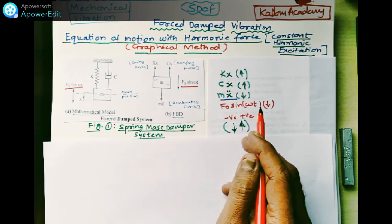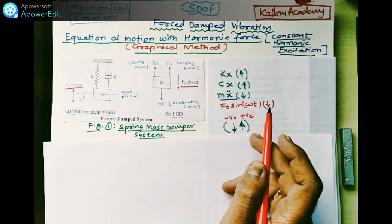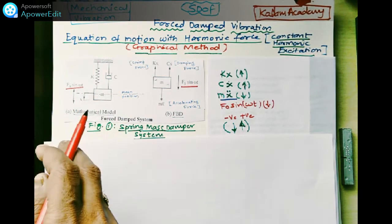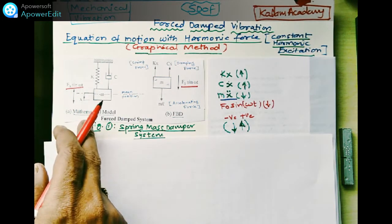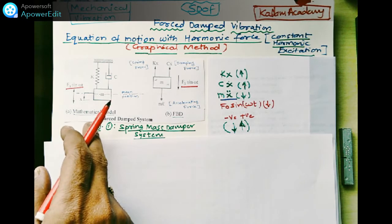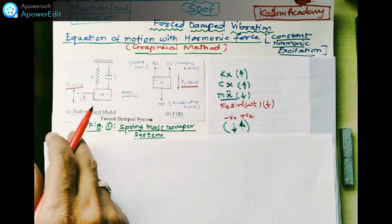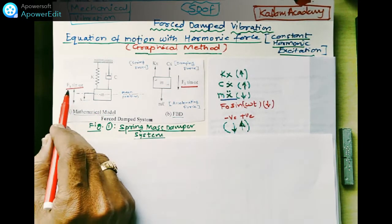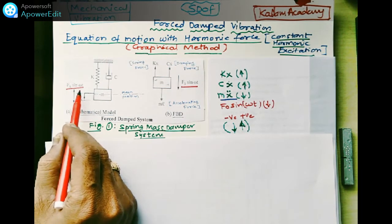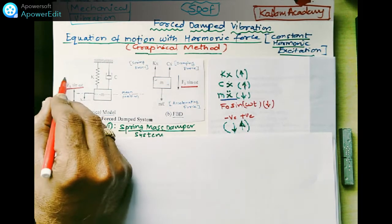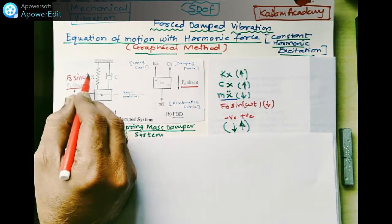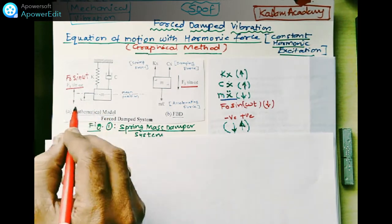In this single degree of freedom force damped vibration, we have to consider this vibratory system. This is the spring-mass system with viscous damping, and here the harmonic force fo·sin(ωt) is applied.